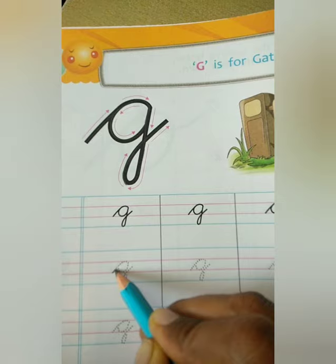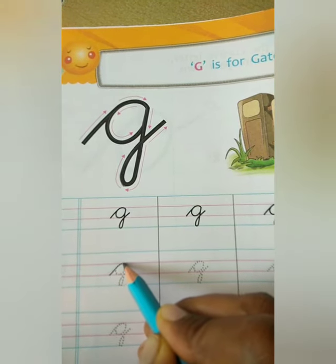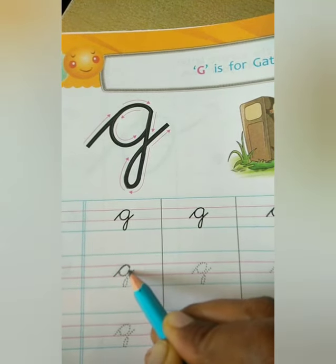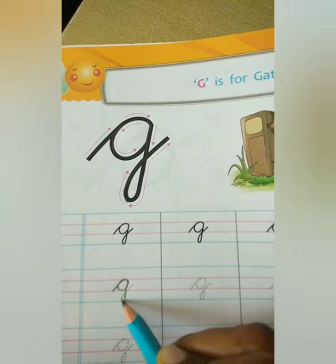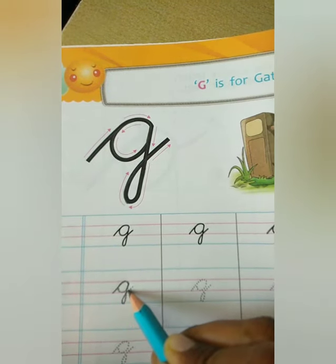Start from here, touch to red line, curve, down side, then curve, down side, then touch to blue line and up.